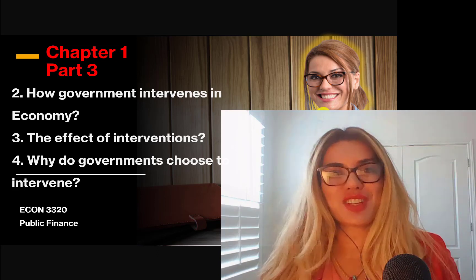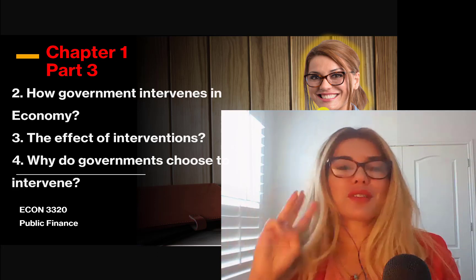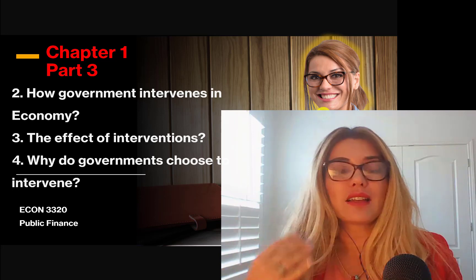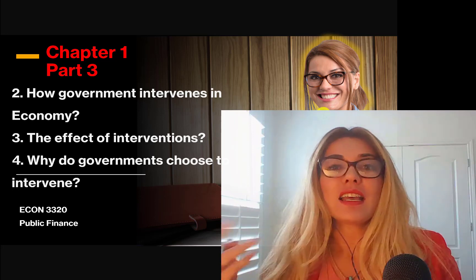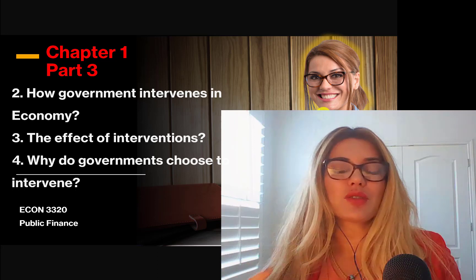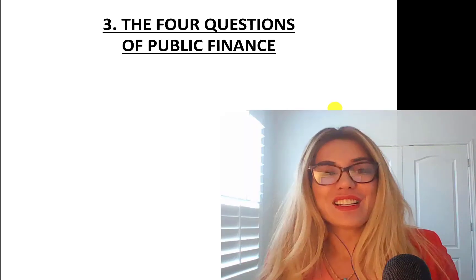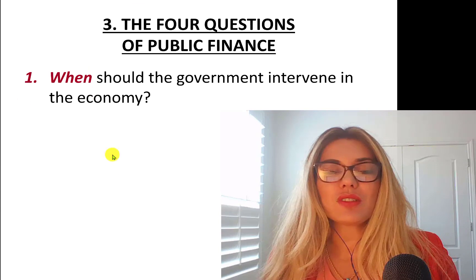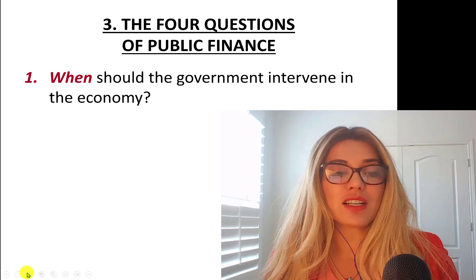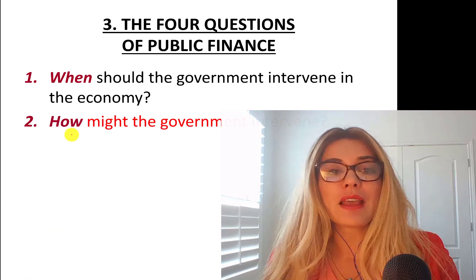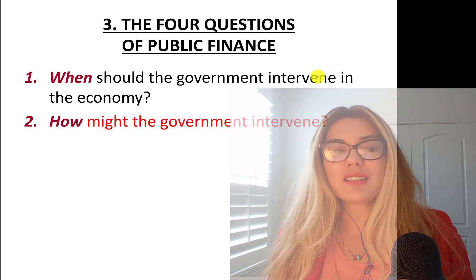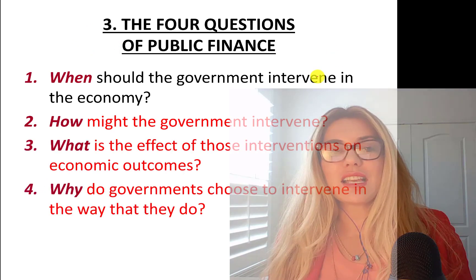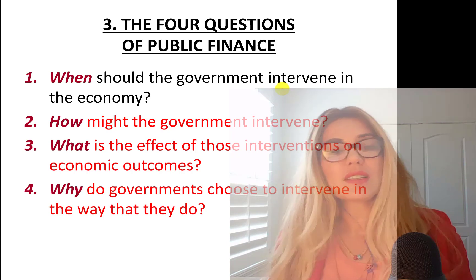Hello everyone, we are back. This is Chapter 1, Part 3. In this part we'll continue with the four questions that are asked in public finance, and we are going to cover questions two, three, and four. The four questions of public finance are: when should the government intervene in the economy — covered in the previous part — how might the government intervene, what is the effect of these interventions, and why do governments choose to intervene in the way they do.